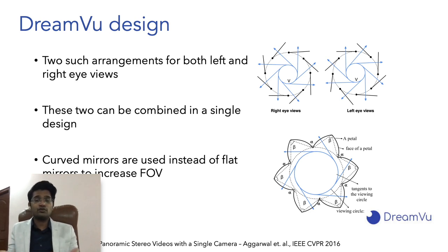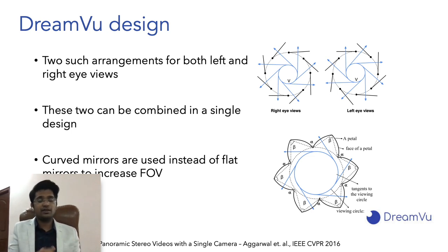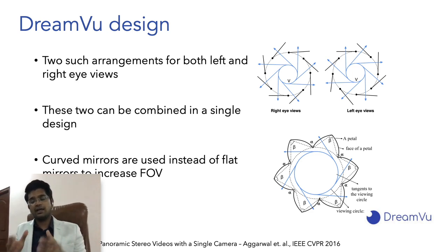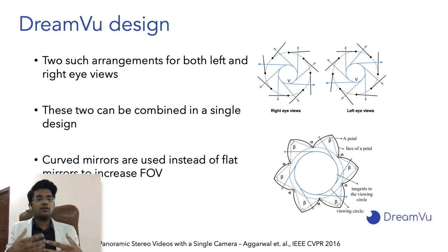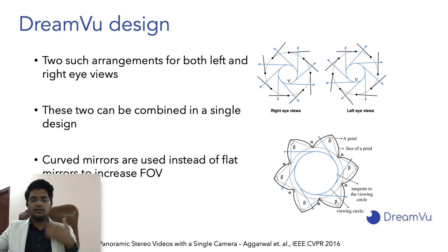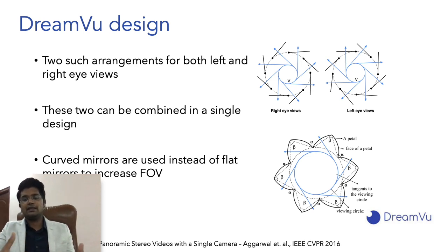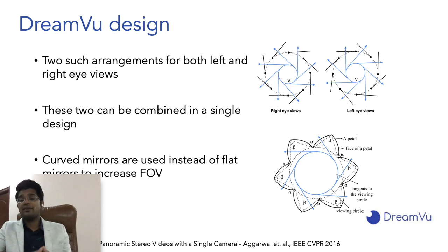There are multiple mirror options: flat mirrors, parabolic mirrors, and elliptical mirrors. We did a study and found that parabolic mirrors are most effective for providing uniform resolution. To increase the field of view from top to bottom and in the horizontal direction, curved mirrors are preferable since flat mirrors always have a limited field of view. With this design we solved technical design challenges to ensure no occlusion, no inter-reflections, no missing regions, and no duplications.